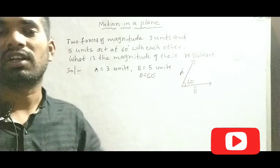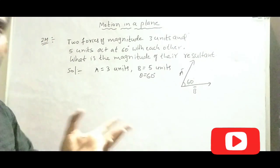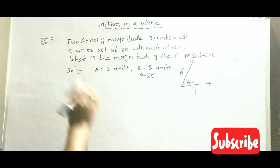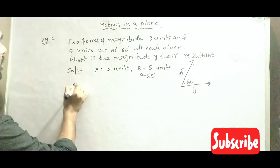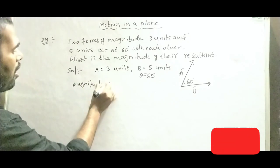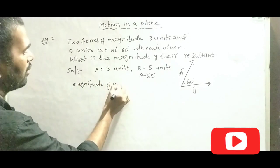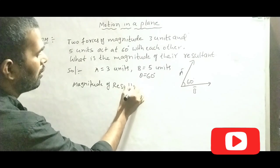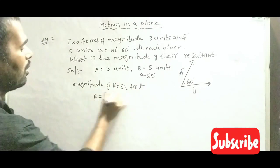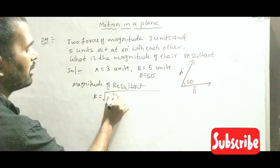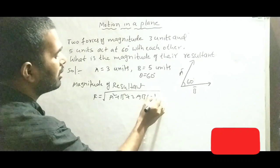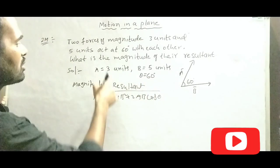Magnitude of resultant vector R equals under root of A square plus B square plus 2AB cos theta.